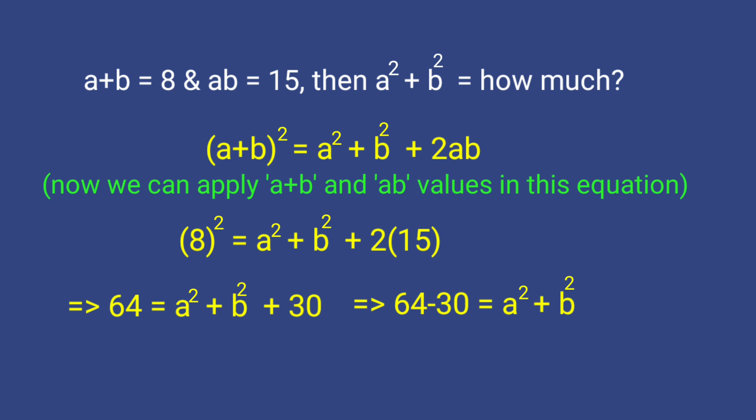Then 64 minus 30 is equal to A square plus B square. Therefore A square plus B square is equal to 34.